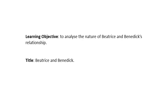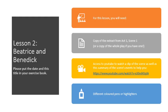What we're going to be looking at is analyzing the nature of Beatrice and Benedict's relationship — that's the relationship at this stage in the play. Everything we do in these lessons is contemporaneous, which just means we're doing the analysis as we go along. Beatrice and Benedict is your title — put that into your books. For this lesson you're going to need a copy of the extract from Act One Scene One, which I'll attach to Class Charts, or a copy of the whole play if you've got one.